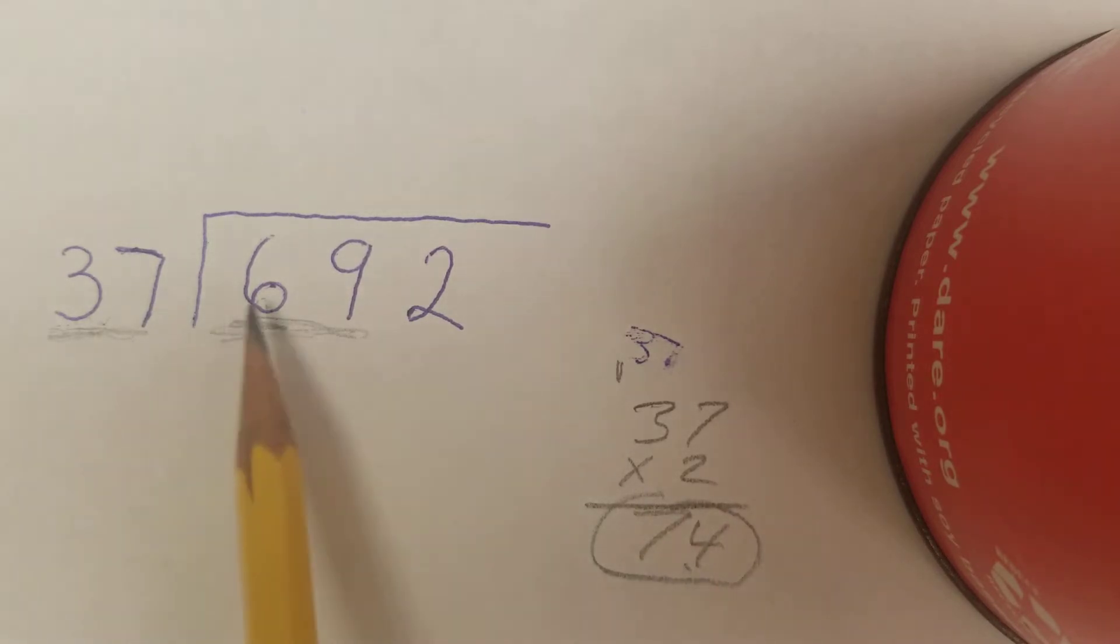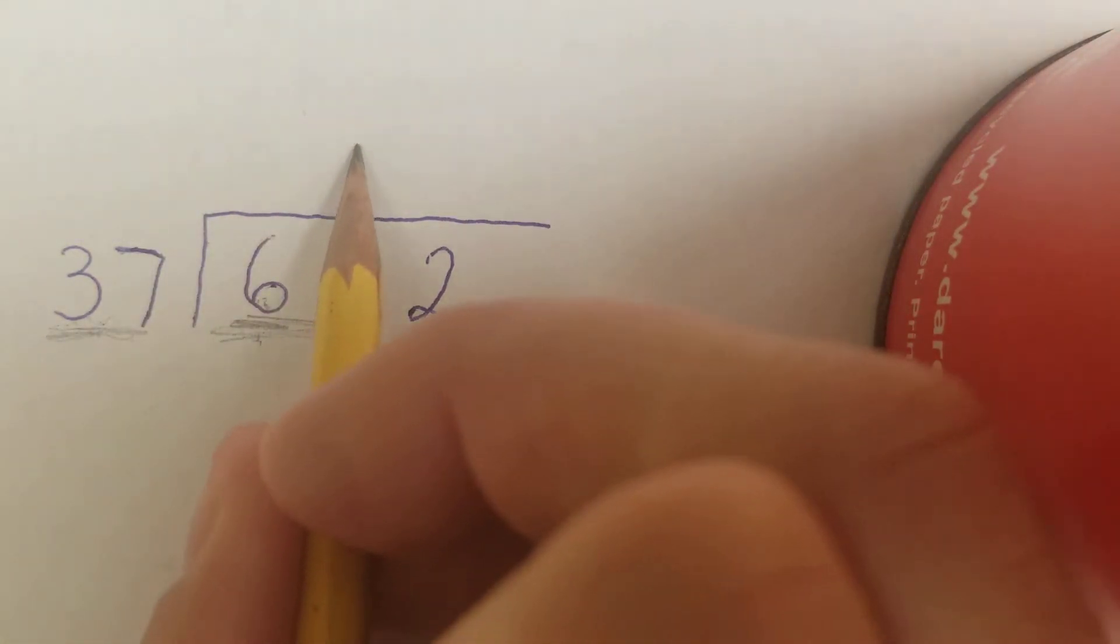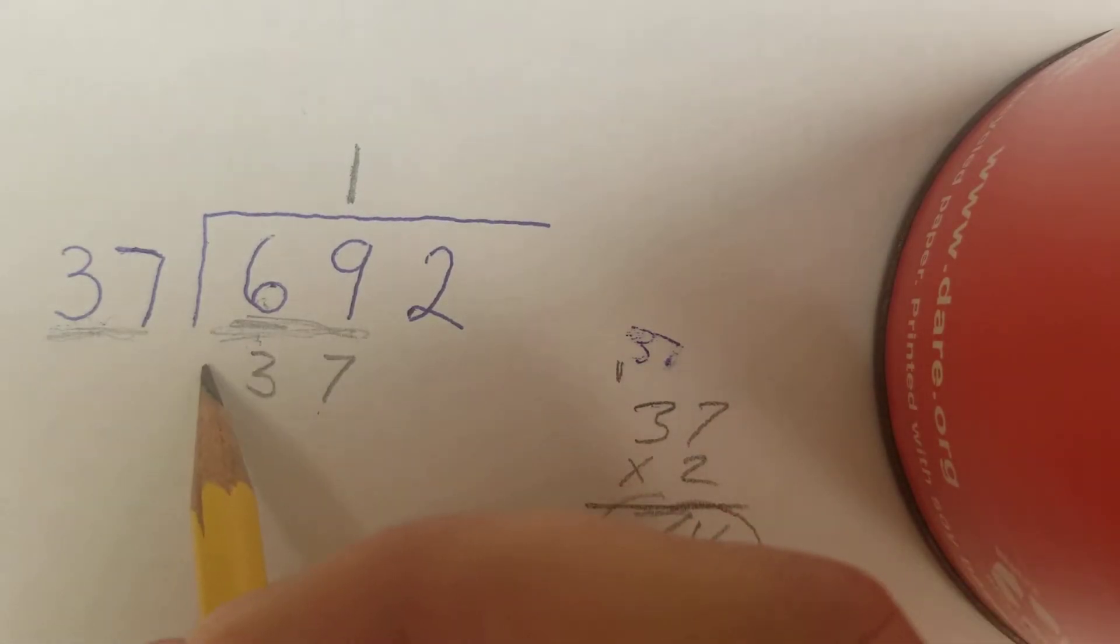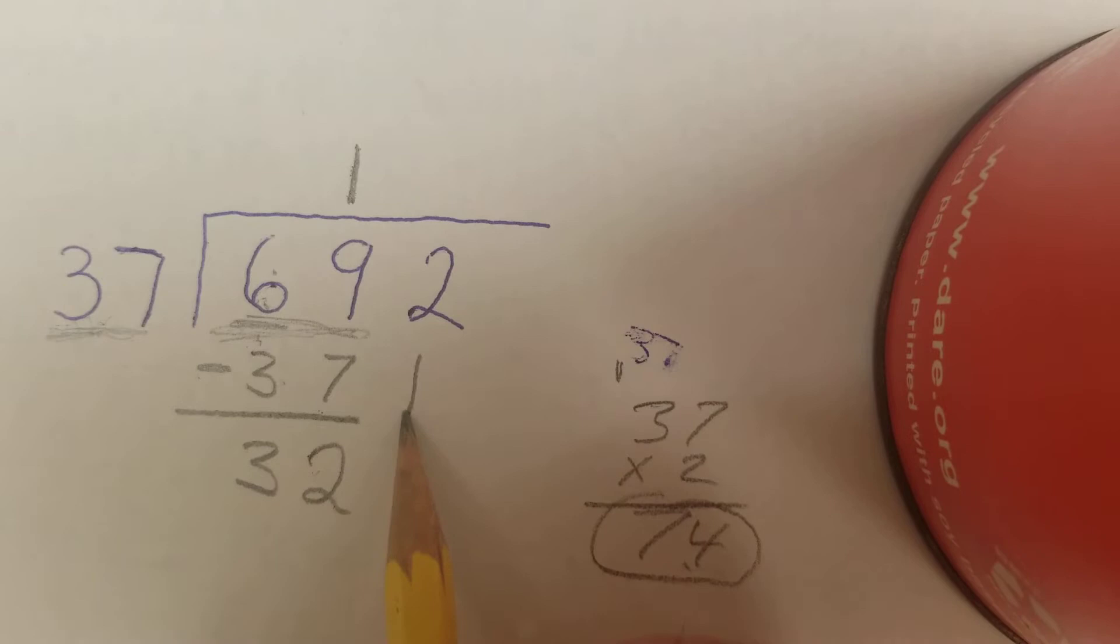Well, 74 is larger than 69, it's too big. So I can't do it twice, my only logical explanation is once. I'm going to put my 1 directly above the 9. 1 times 37 is 37. We're going to subtract. 9 minus 7 is 2. 6 minus 3 is 3. Then I'm going to bring down my 2.